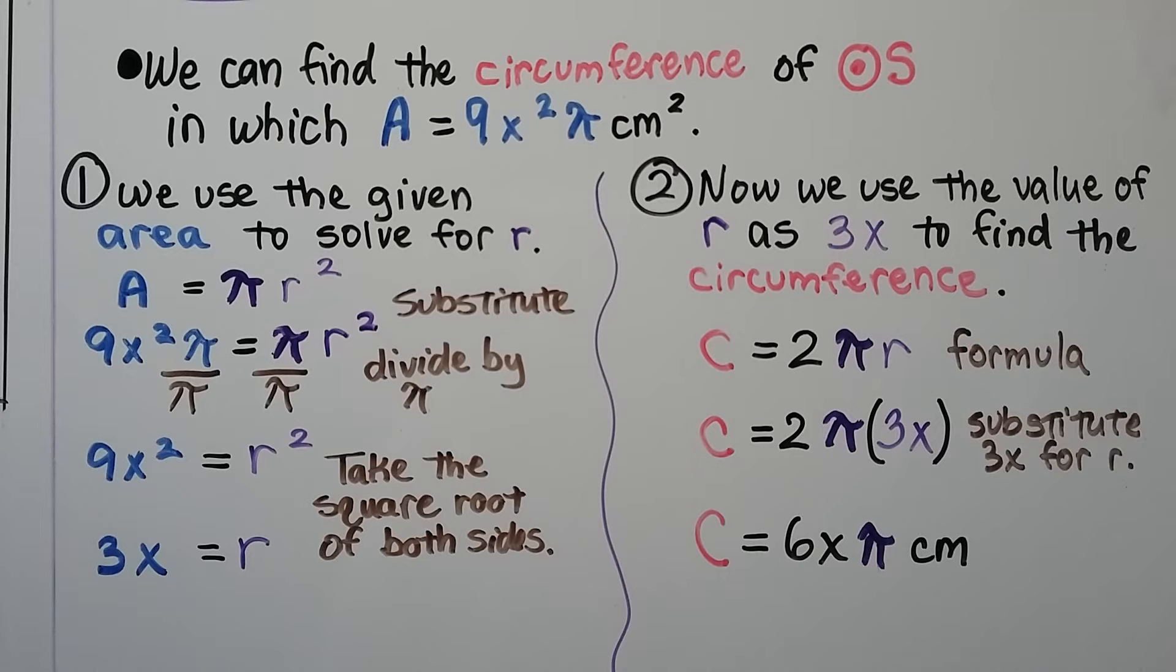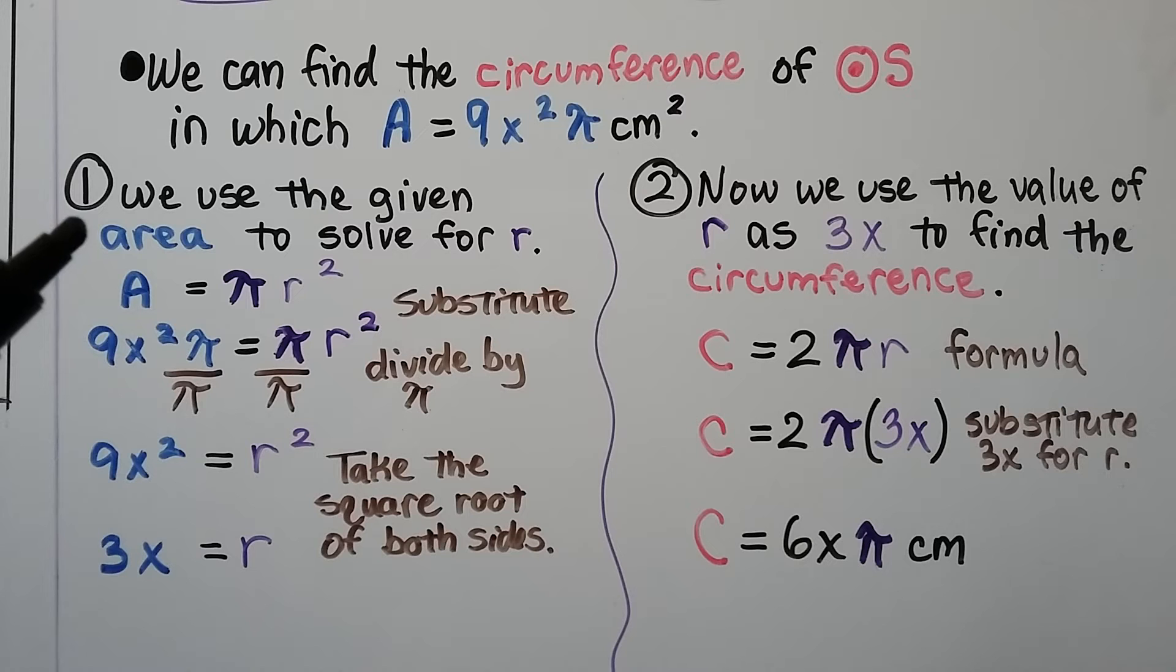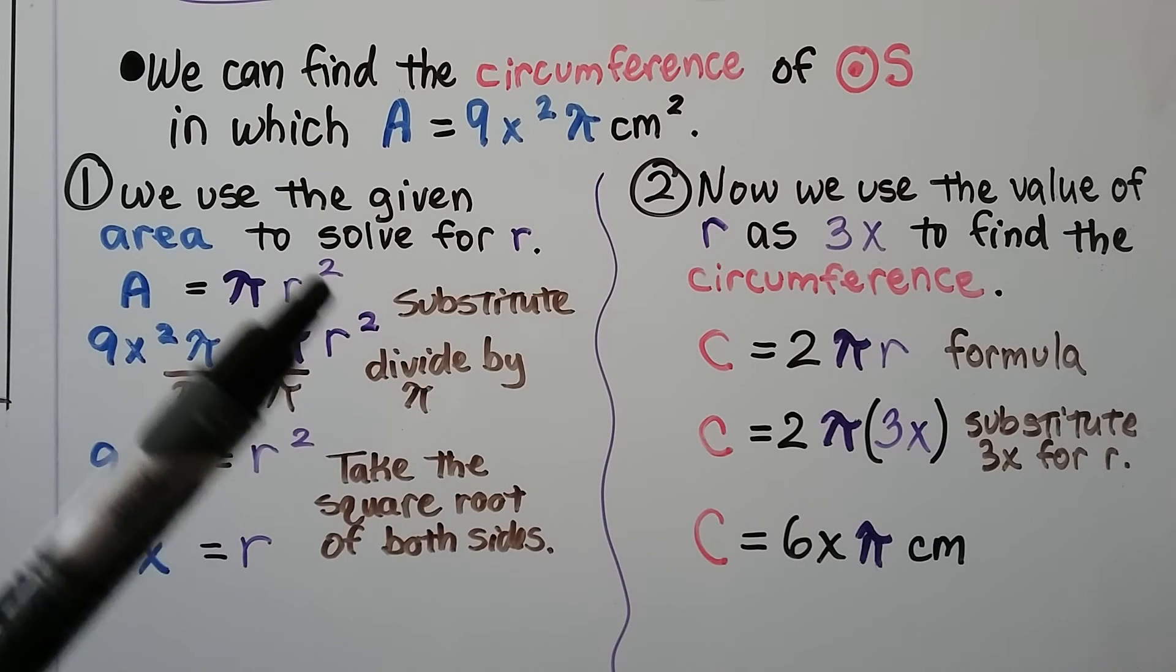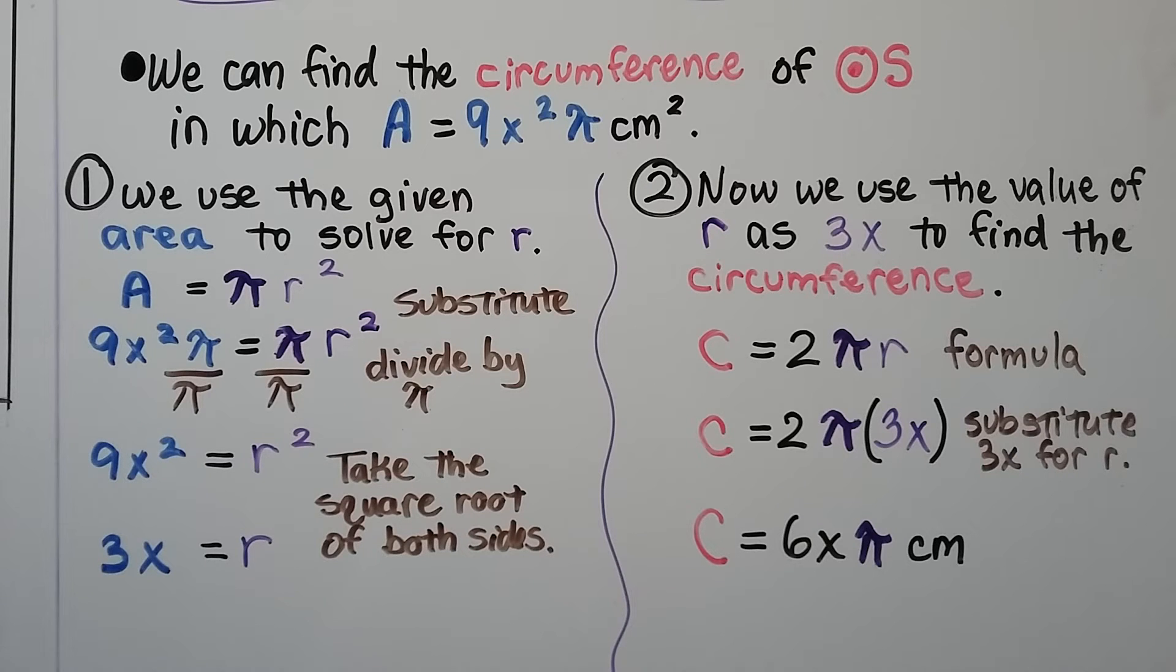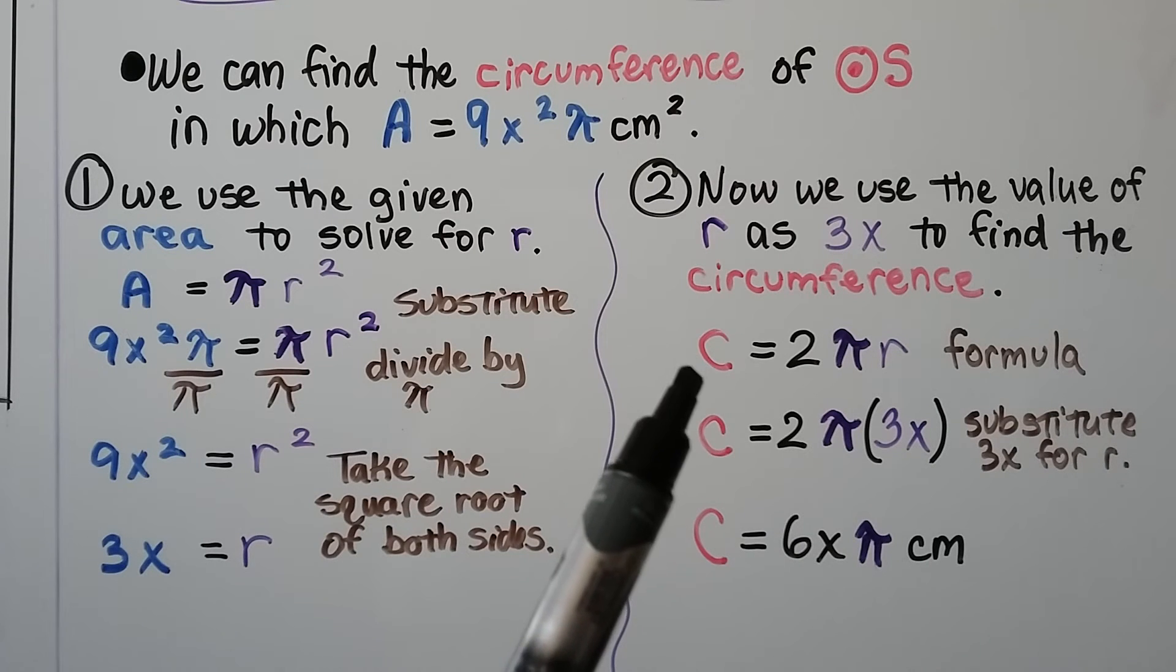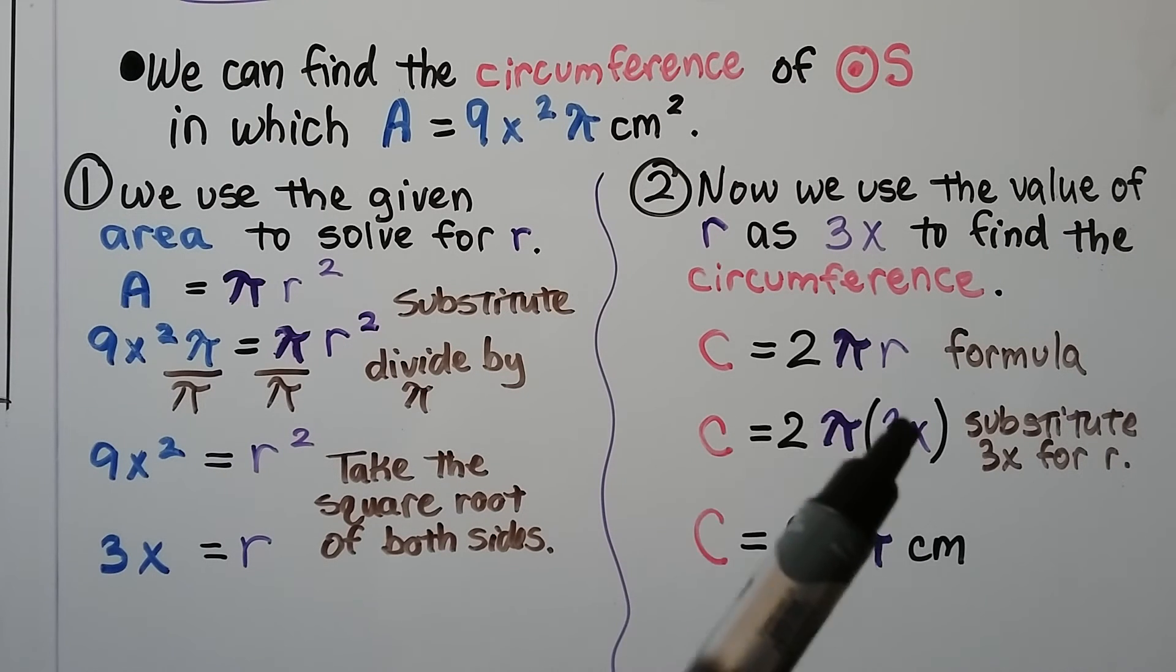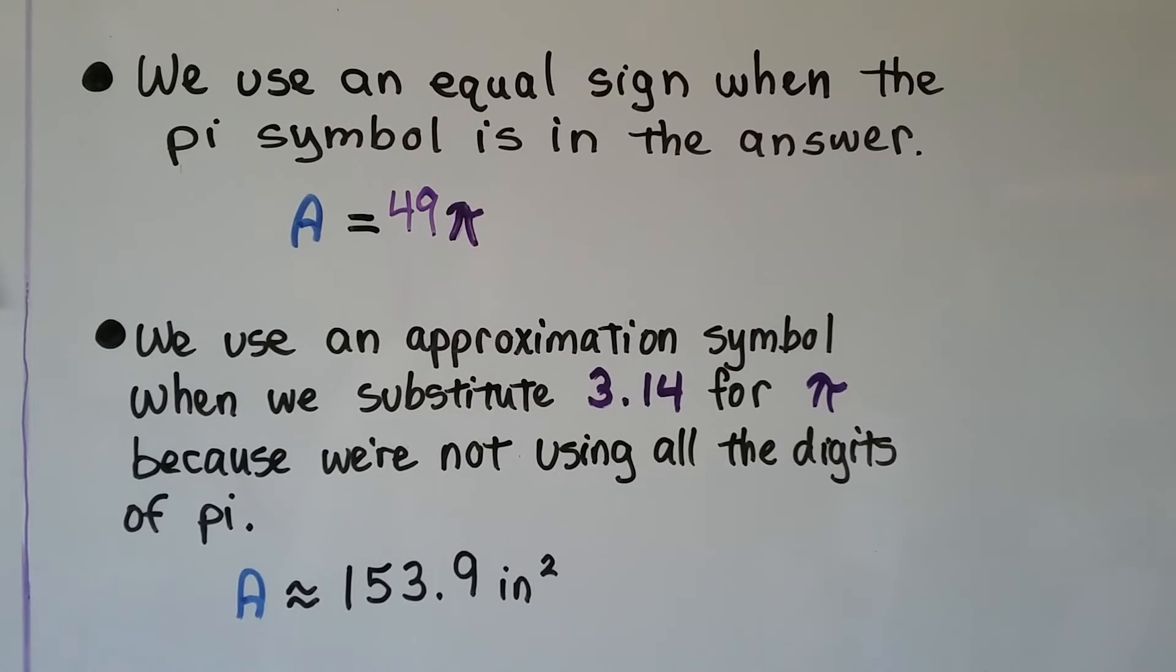We can find the circumference of circle S in which the area equals 9x squared pi centimeters squared. First we use the given area to solve for r, the radius. Here's our formula for area. Instead of A, we have 9x squared pi equals pi r squared. We divide both sides by pi and eliminate them. We get 9x squared equals r squared. We take the square root of both sides and get 3x equals r. Now that we know the radius is 3x, we use that value to find the circumference. We substitute 3x for r, multiply 2 times 3x, and get the circumference equals 6x pi centimeters. That's not squared because we're doing circumference, not area.